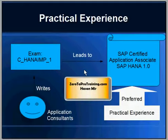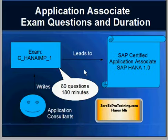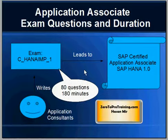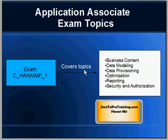This is an associate level certification, so practical experience is preferred but not really required, though there will be some questions on the exam that expect some experience. Like most exams, you will be asked 80 questions and have 180 minutes. The passing score for both technical and application associate certifications is 65%. The exam covers applied topics such as business content, data modeling, data provisioning, optimization, reporting, and security and authorization.